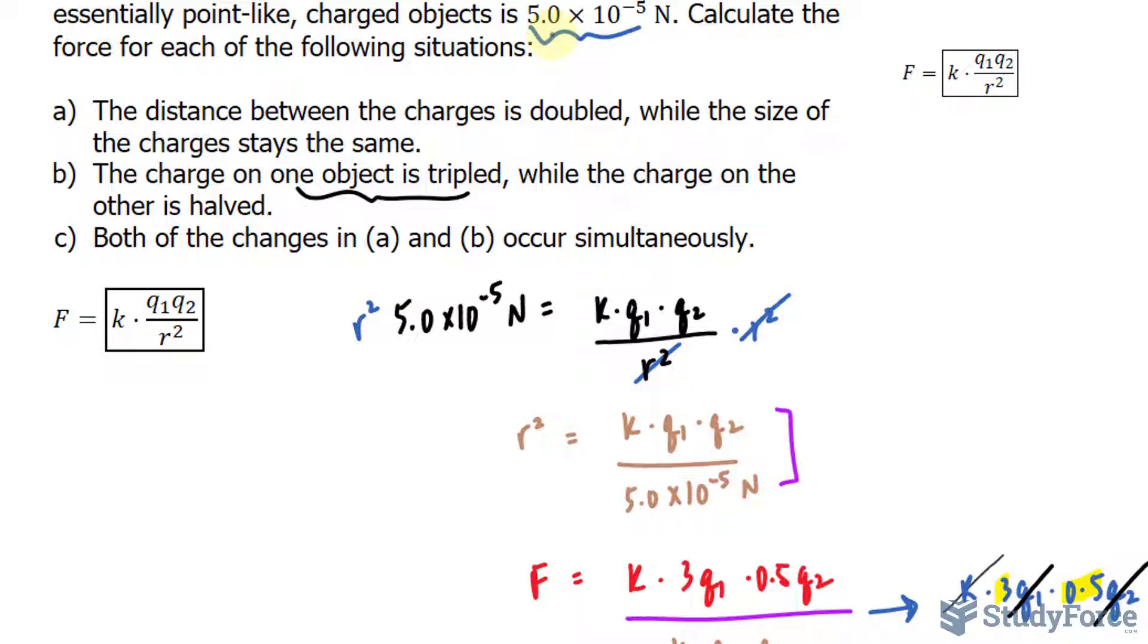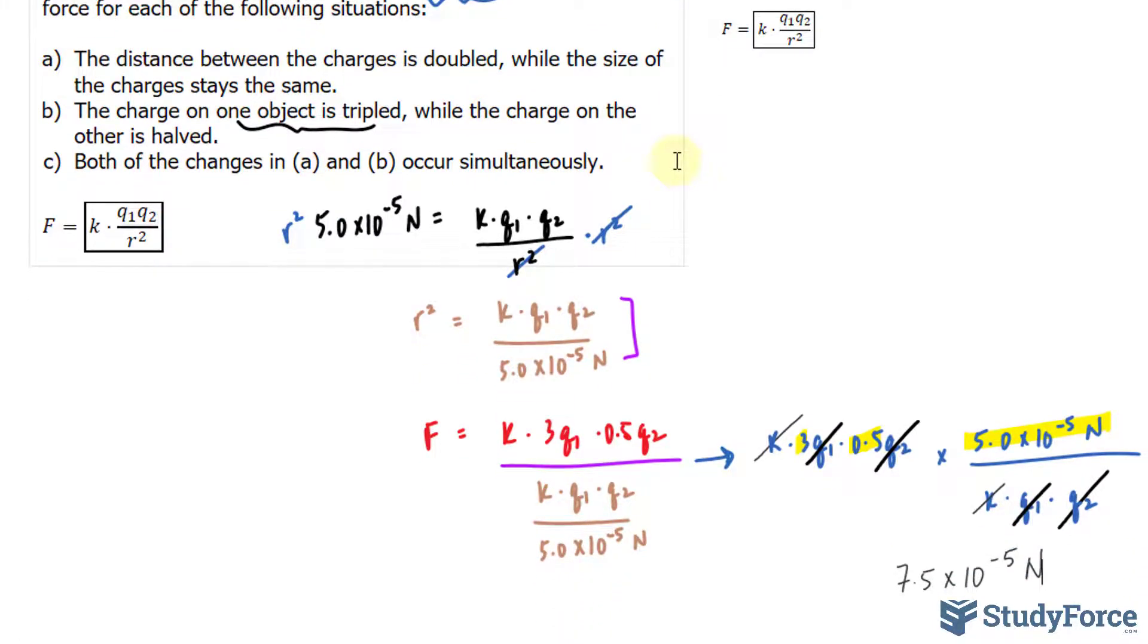In question number C, we have both of the changes in A and B occur simultaneously. To make matters simple for us, I'm going to borrow some information that I obtained from this question. So here is my work for question C. I'm going to use what I found here.